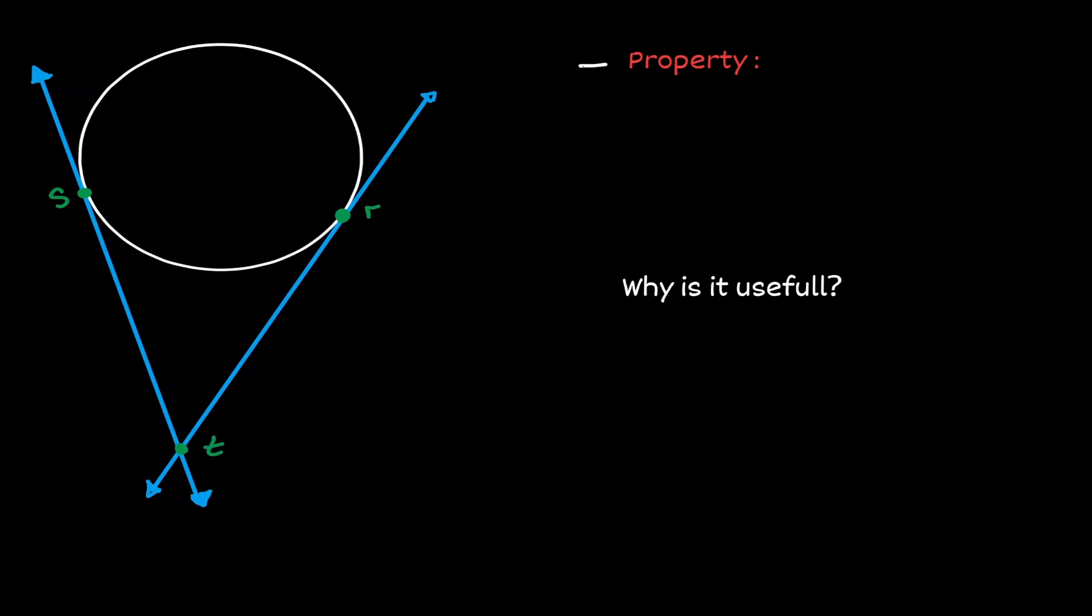When we encounter this situation, there's a property that will always be true. If we consider the point where both tangent lines intersect, this point will be equidistant to both points of tangency. In other words, these two yellow line segments will always be congruent to each other.